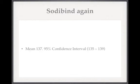So let's look at an example — the example of sodium bind yet again. Suppose you take 20 individuals at random from those taking sodium bind. You work out their serum sodium levels and then you take the average. And because you know a bit about the distribution, you're able to work out a confidence interval. You end up quoting that the mean sodium level was 137 and the confidence interval was 135 to 139.